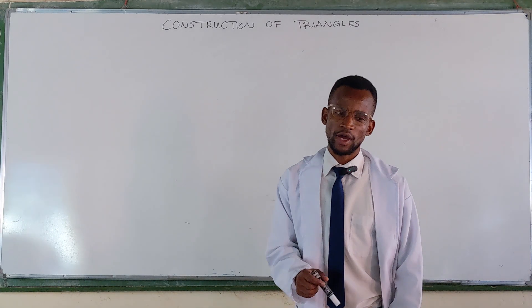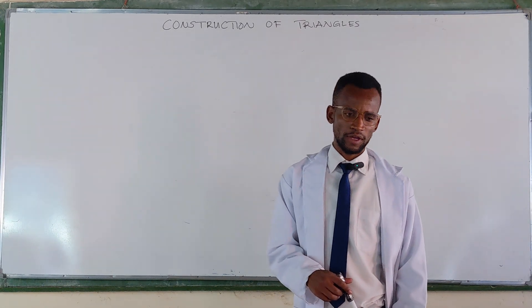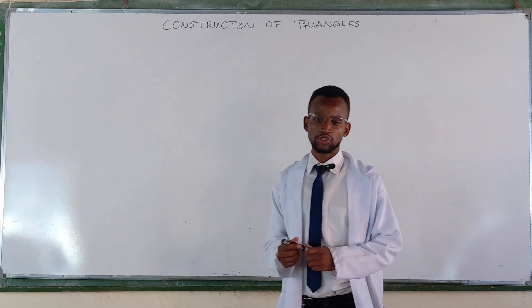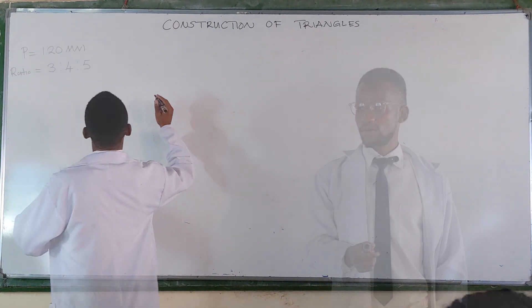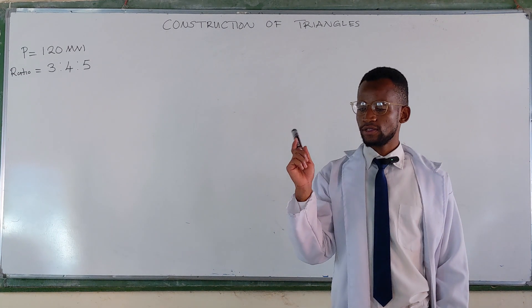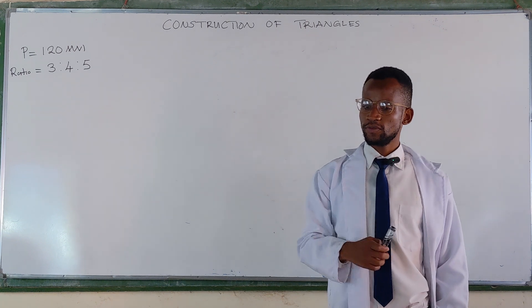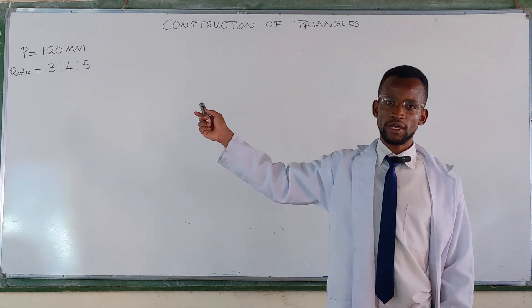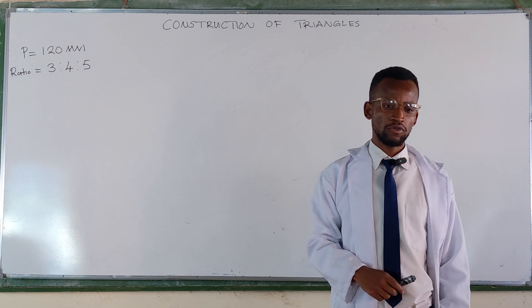To construct a triangle ABC, given the perimeter and the ratio of sides. Write the perimeter is equal to 120 millimeters, and the ratio of sides 3 to 4 to 5.